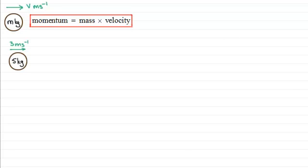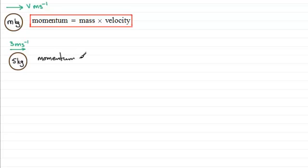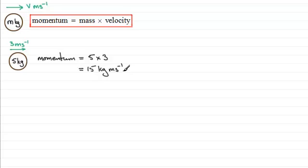For instance, if we had a particle of mass 5 kilograms moving with a speed of 3 meters per second to the right, then the momentum would be 5 multiplied by 3, giving us 15. The units are kilogram meters per second. And because momentum involves velocity, it is a vector quantity — we need to associate a positive sense with it. So we have a momentum of 15 kilogram meters per second to the right.